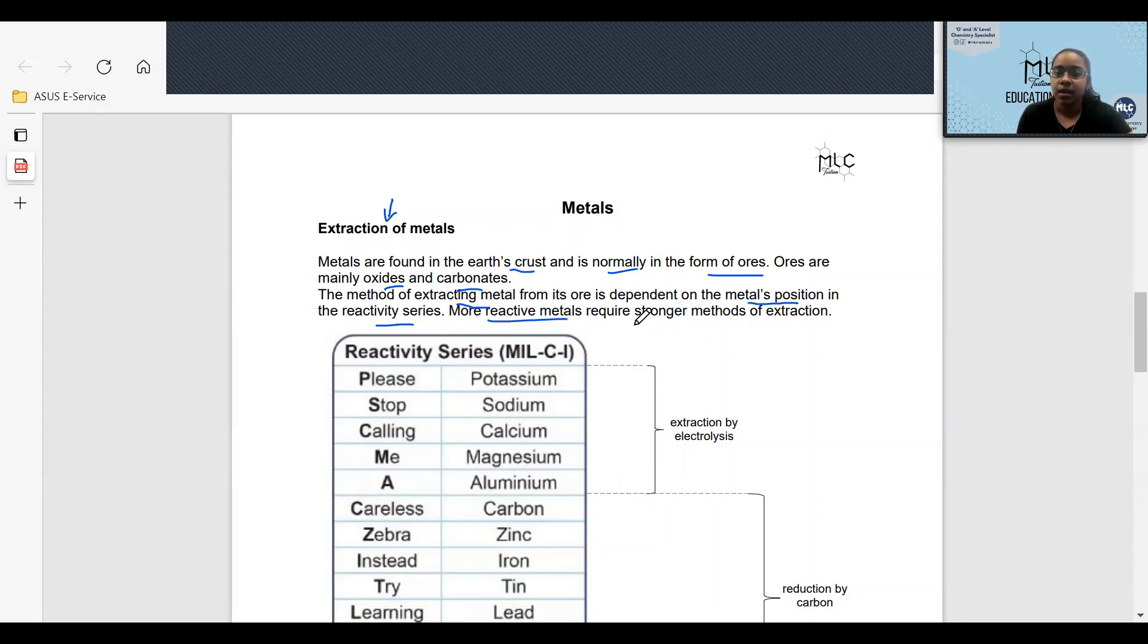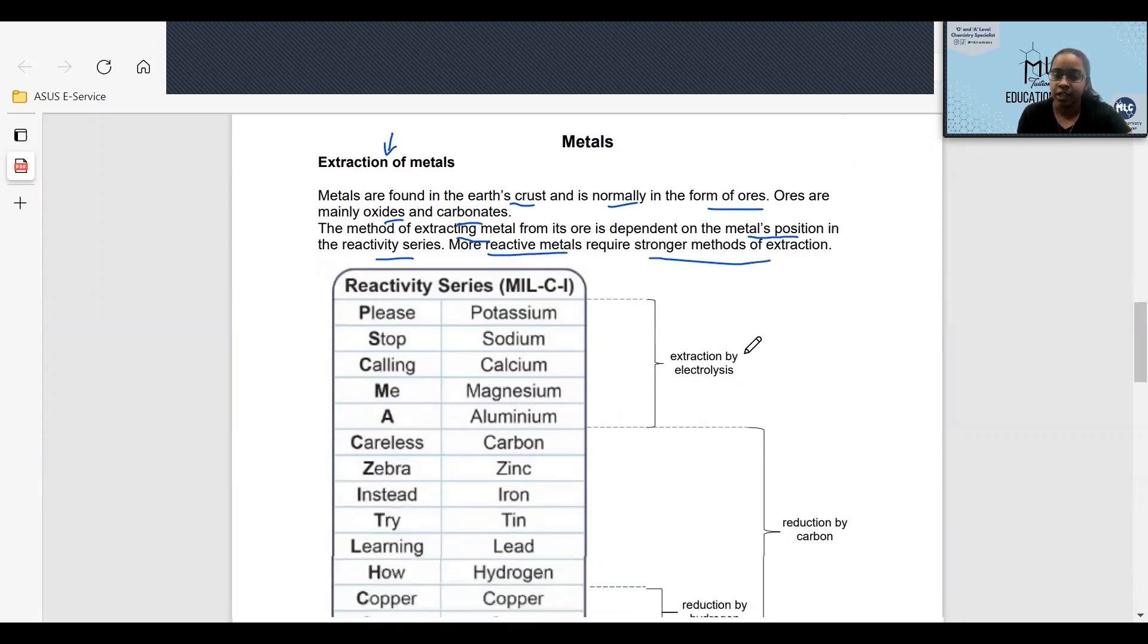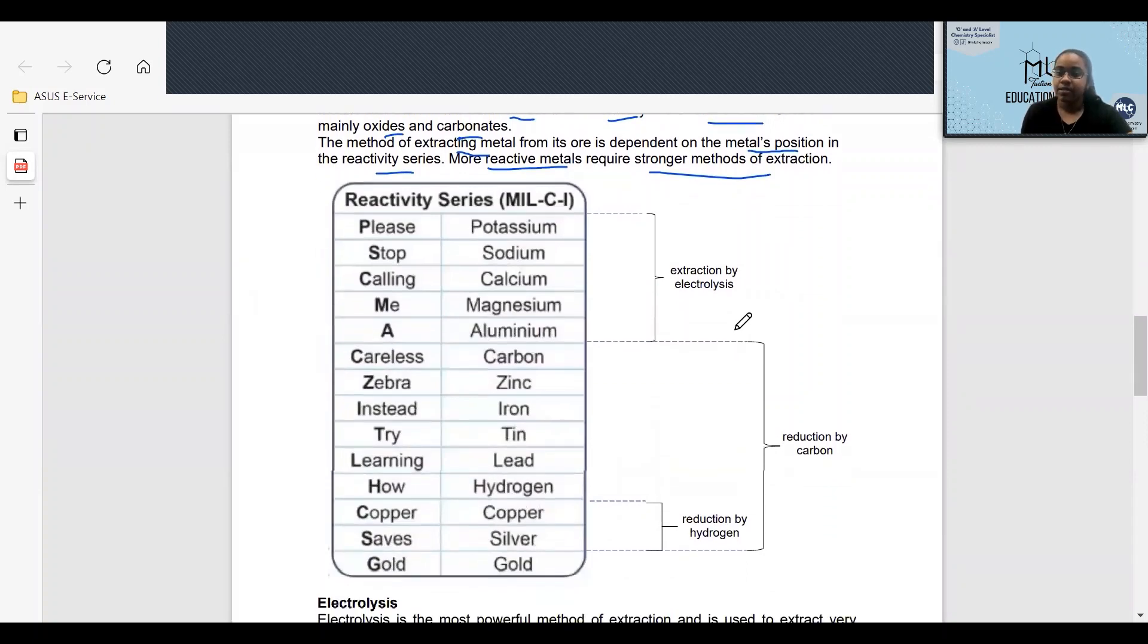More reactive metals require stronger methods of extraction. So there are three methods of extraction. The first is electrolysis, followed by carbon, and lastly, hydrogen.